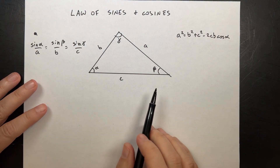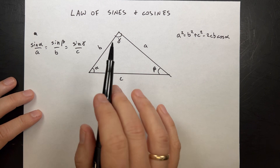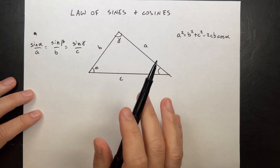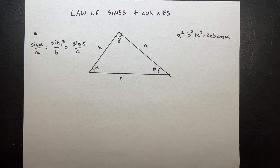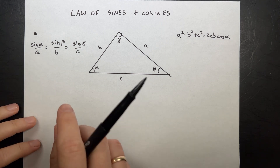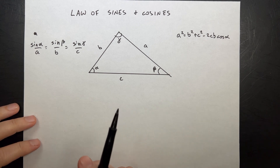I see this a lot in high school so I want to go ahead and derive this. This is the law of sines and cosines. I'm going to derive this, and then after this I'll do another video where I will do vector addition problems with the law of sines and cosines and then show you a better way to do it.